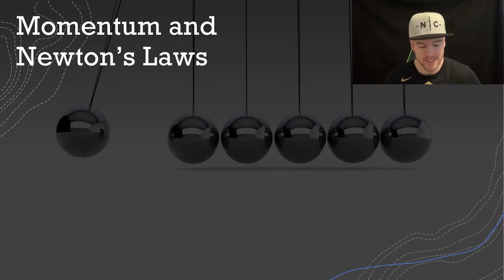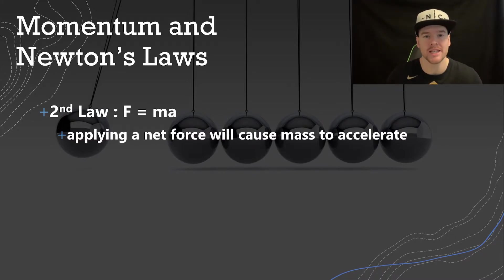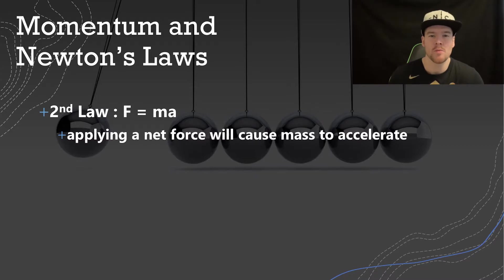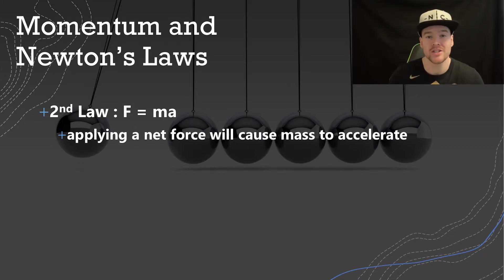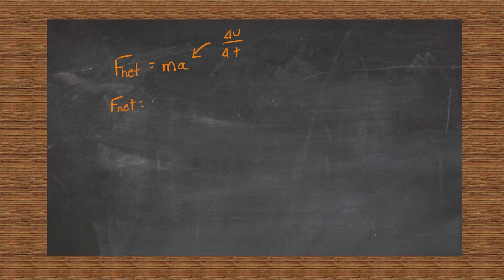In this course, the law we're going to look at most is Newton's second law: F equals ma, which means applying a net force causes a mass to accelerate. We're interested in this because acceleration is a change in velocity, and velocity is a component of momentum. We're mostly talking about changing an object's velocity. Starting with F net equals mass times acceleration, and rewriting acceleration as change in velocity over change in time, we get: F net equals mass times delta-v over delta-t.